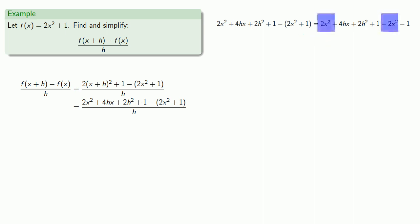We'll rearrange our terms a little. So we have like terms 2x² and minus 2x². We'll write those next to each other. There's nothing like 4hx, so we'll just copy that down. There's nothing like 2h², so we'll copy that.